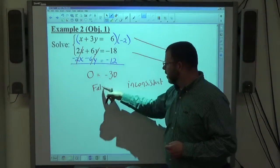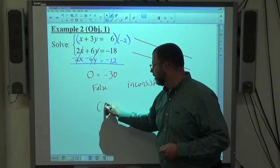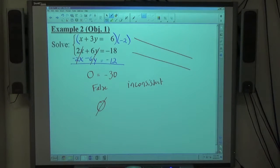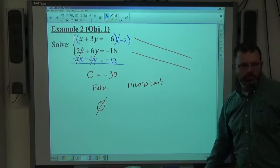When you get an inconsistent equation or you get a false statement here, your answer is the empty set. There are no solutions to the problem. Again, we're looking for a point of intersection. Parallel lines don't have points of intersection, so there's no solution. Thank you.